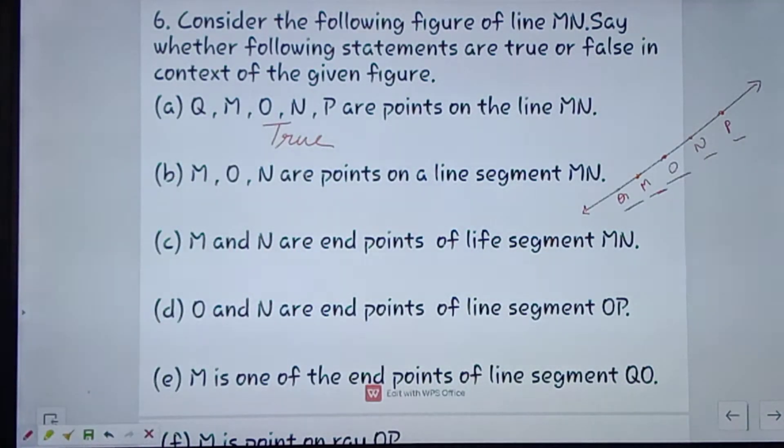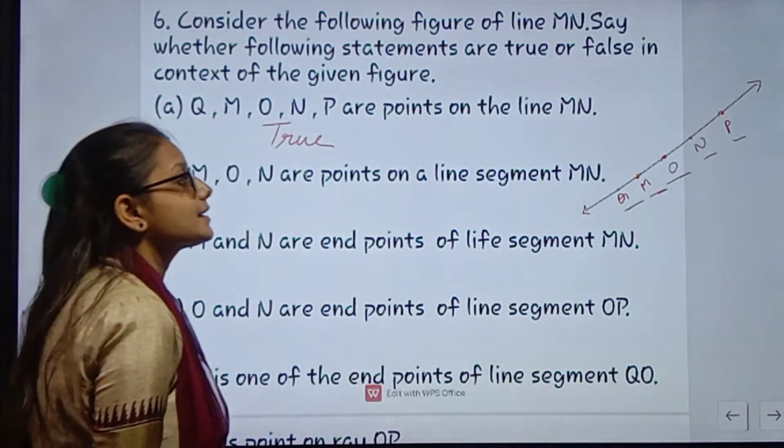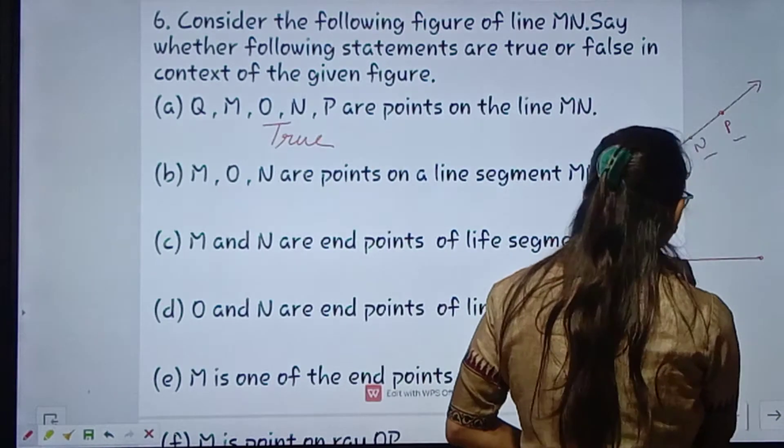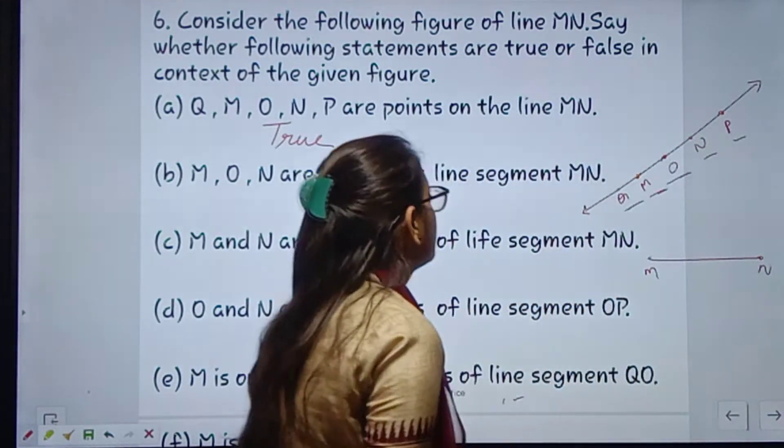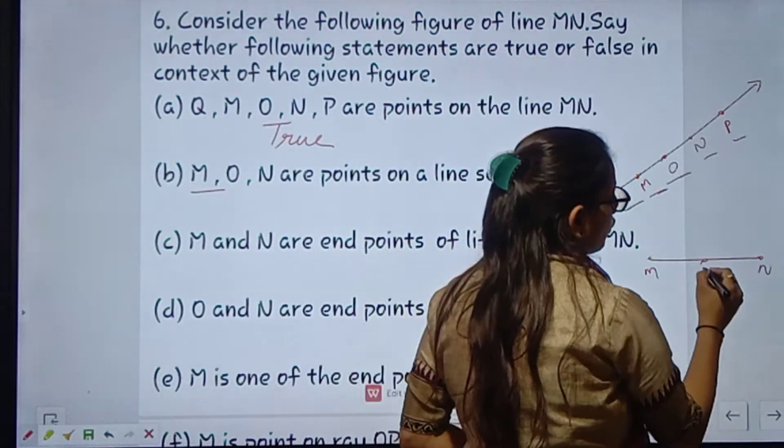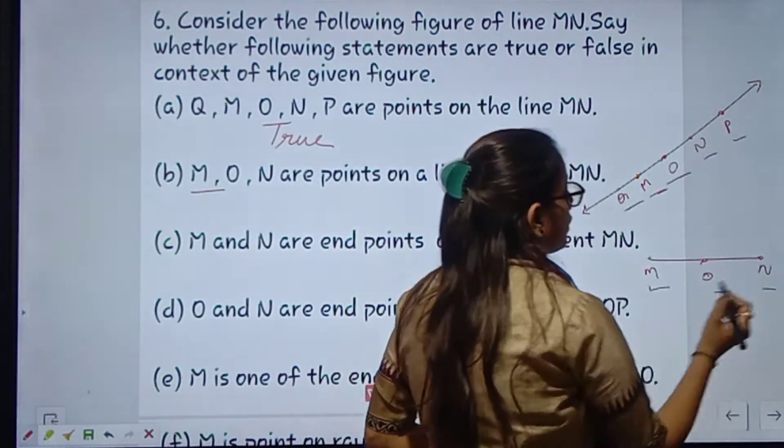Next is M, O, N are points on a line segment MN. Line segment kya hota hai - jiska starting point or ending point fixed hota hai. To M, O, N - three points hai, so statement is true.